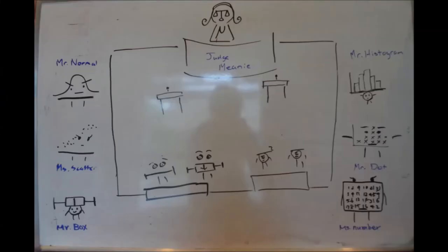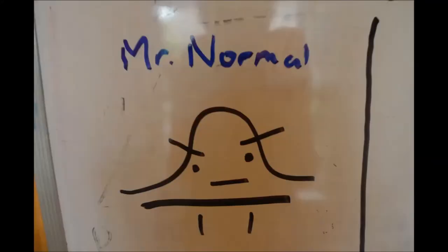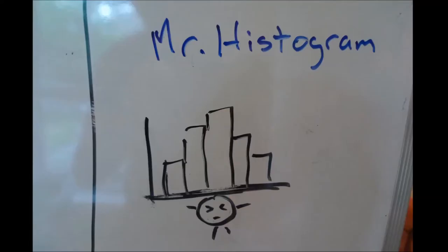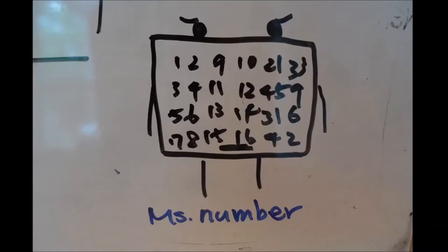We have the jury to be the deciding factor for the dispute. Here in the jury, we have Mr. Normal, Ms. Scatter, Mr. Box, Mr. Histogram, Mr. Dot, and Ms. Number.